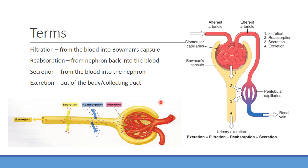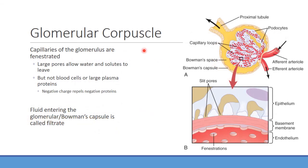Some things are not filtered at all but can be secreted. Some things are filtered and never reabsorbed. Excretion equals filtration minus reabsorption plus active secretion — this all occurs in the peritubular capillaries. Looking at the glomerular corpuscle, the capillaries are fenestrated — having holes that allow water and solutes through. There are three layers: the fenestrated endothelium, the basement membrane, and the epithelium made of podocytes with long foot processes.